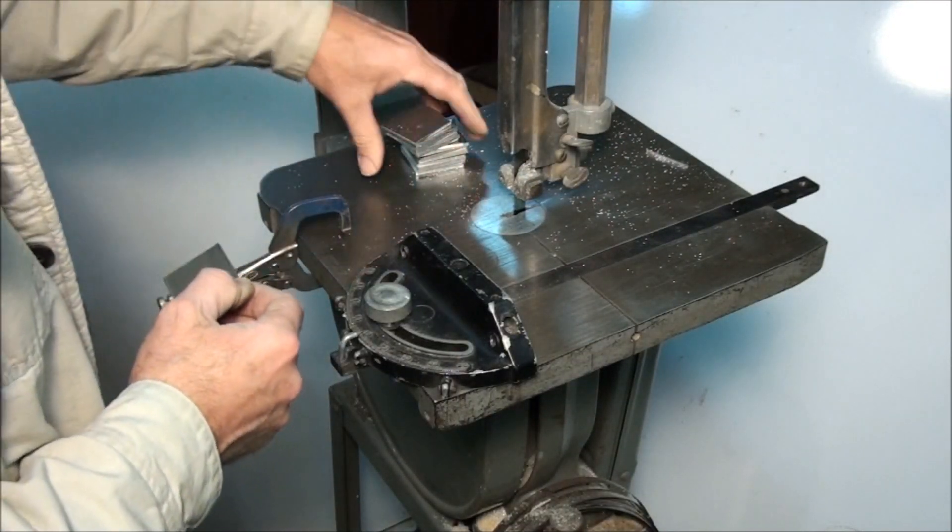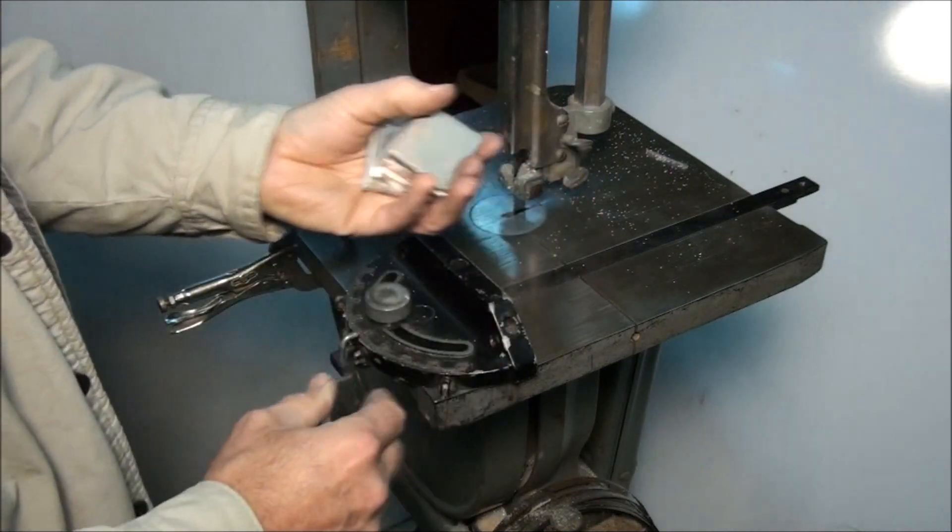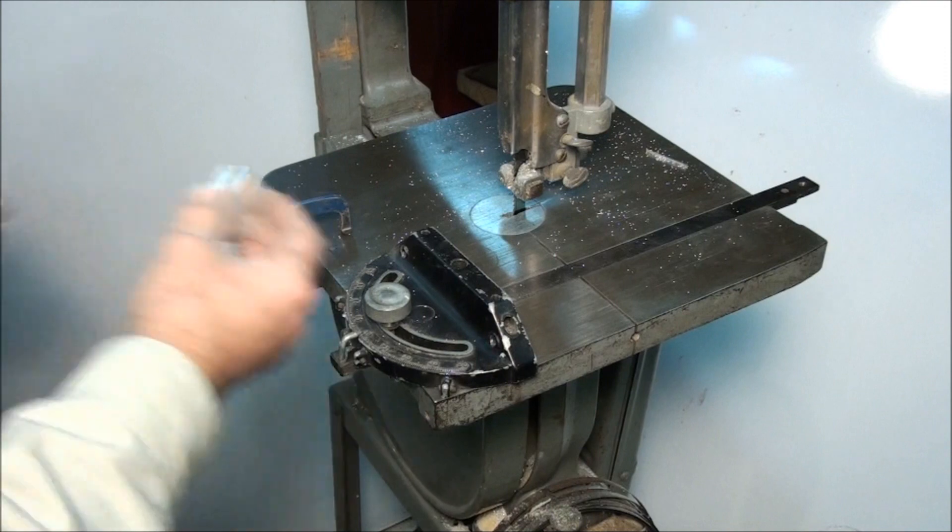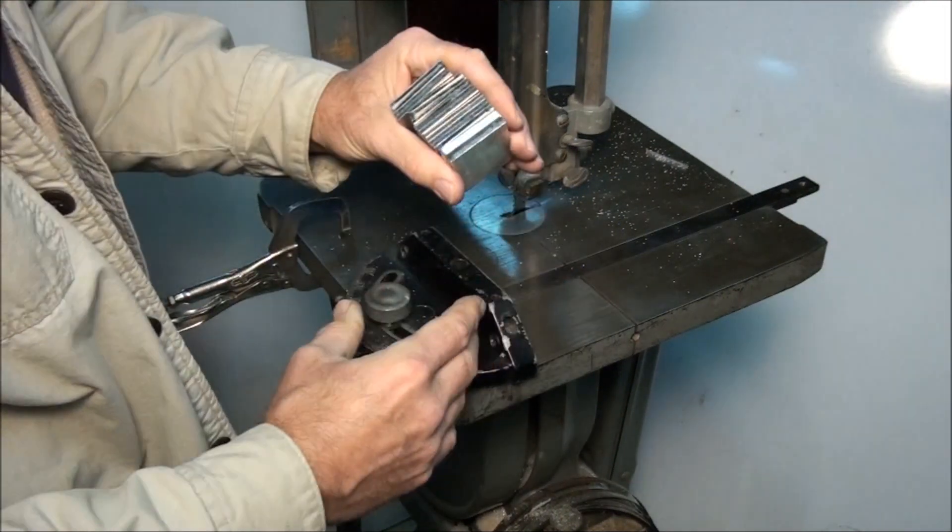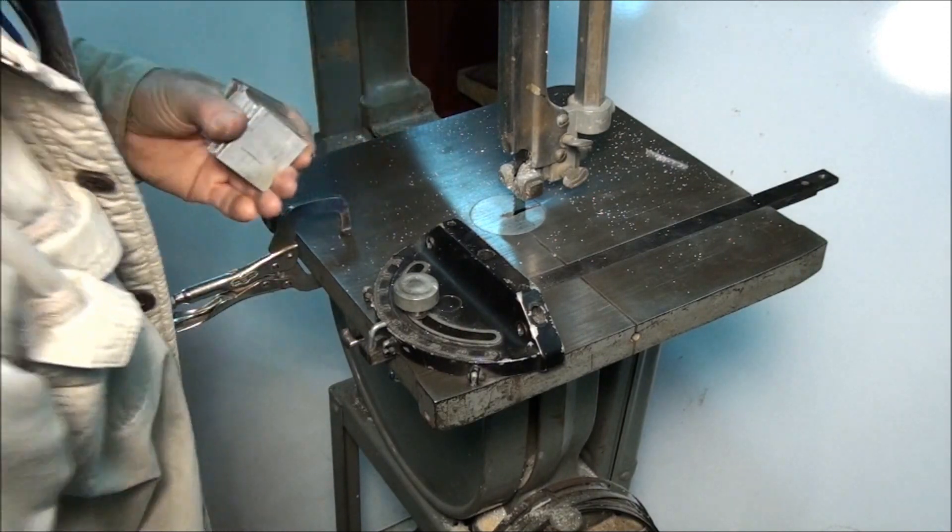So we have 22 ⅛ inch thick pieces and our two bottom plates, ¼ inch thick. Let's move on over to the mill and square them up.